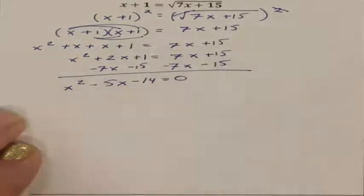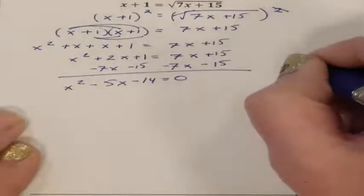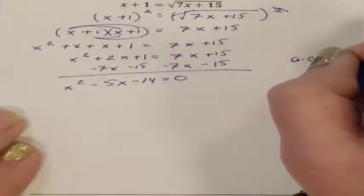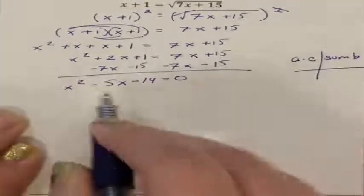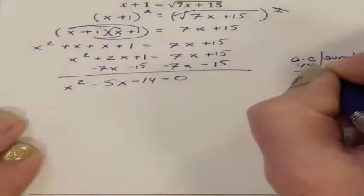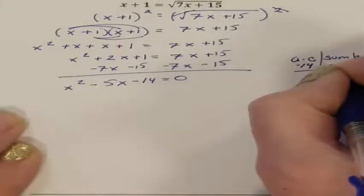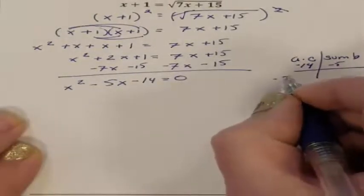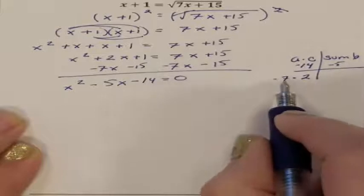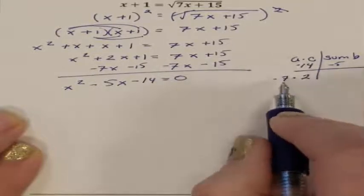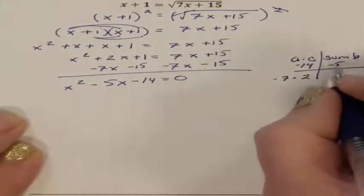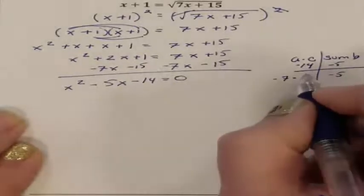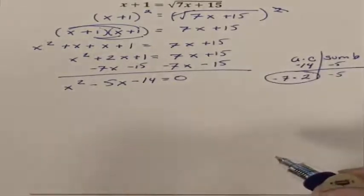When I see I have a problem equal to 0, I'm going to try and solve by factoring. So a times c, somebody better add up to b. a times c is a negative 14, my b is a negative 5. I know that I can do negative 7 times 2 to get the negative 14. If I add these two together, I do get the negative 5 that I needed. So my two numbers are negative 7 and 2.